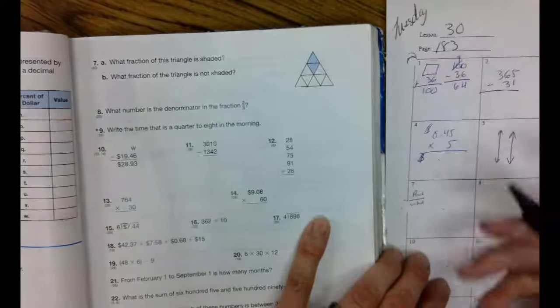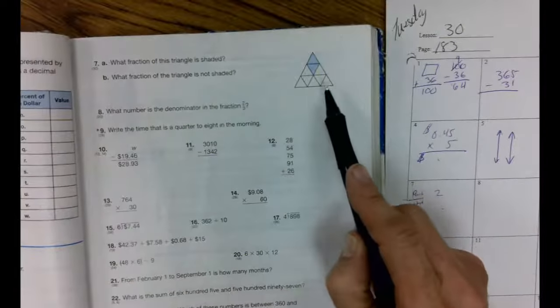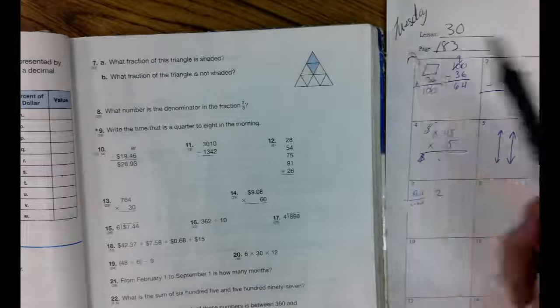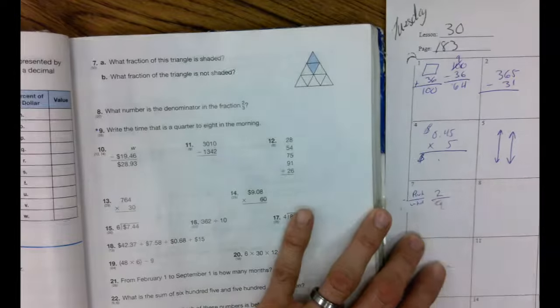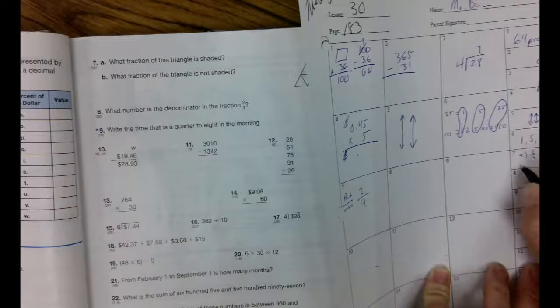Count them with me. One, two. So that's the part. Now the whole means you've got to count them all. One, two, three, four, five, six, seven, eight, nine. Two ninths. So A is two ninths.